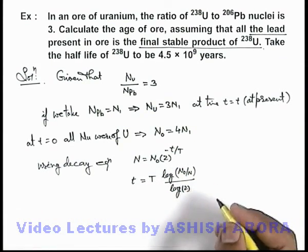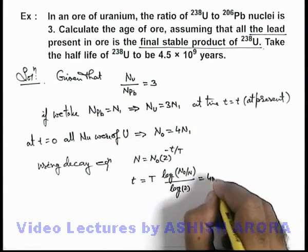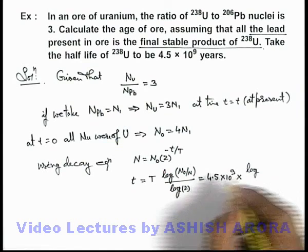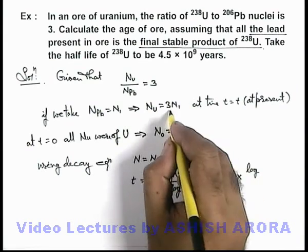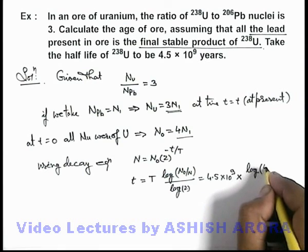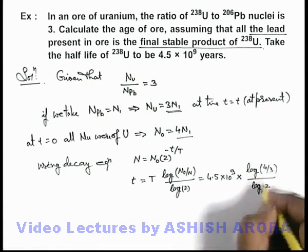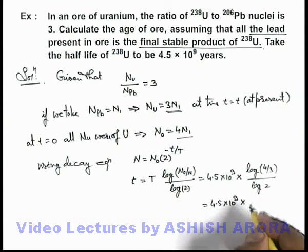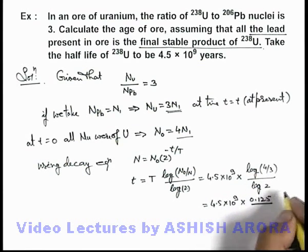If we just substitute the values, the half-life we are already given as 4.5 × 10^9 multiplied by log of—you can see N0 is 4N1 and number of uranium nuclei at this time is 3N1, so this will be 4 by 3 divided by log 2. If we substitute the numerical values, this is 4.5 × 10^9 multiplied by log of 4 by 3, which is 0.125, divided by log 2, which is 0.301.